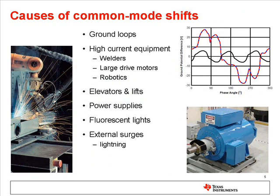Common mode offsets between a sending node and a receiving node can be caused by nearby equipment with high current transients, such as electric motors or welding tools. It can also be caused by improper grounding schemes. Whatever the cause, RS-485 drivers and receivers should be able to send and receive differential signals in spite of the steady state or time-varying common mode voltage.